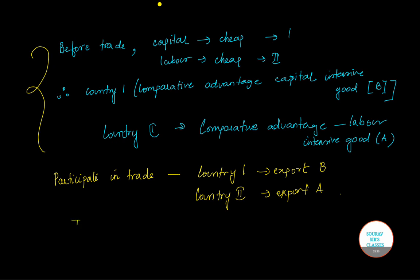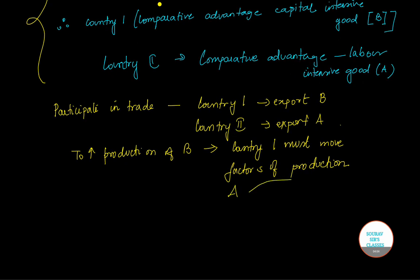Now, to increase the production of good B, country 1 must move its factors of production from industry A to industry B. So to produce more of good B, the producers in country 1 need more capital.